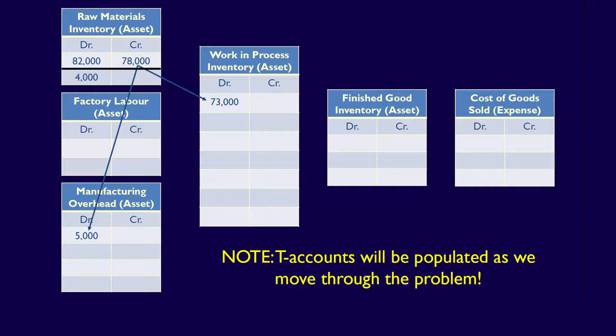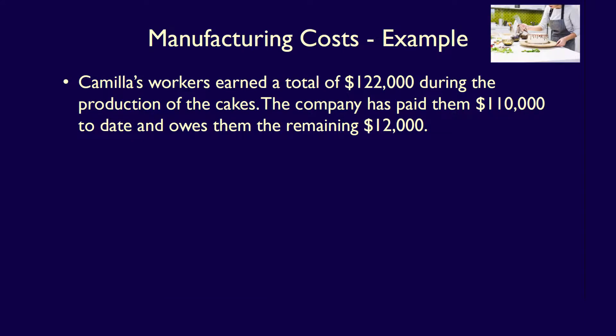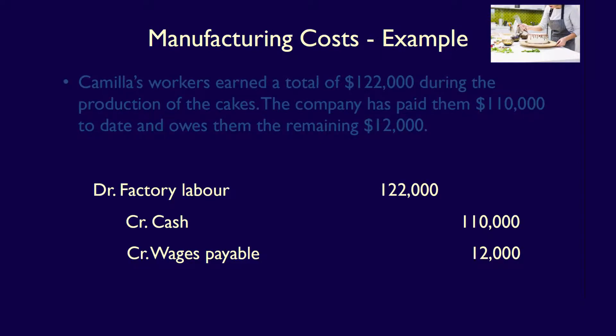That $4,000 is the raw material the company has left for future production. Camilla's workers have earned a total of $122,000. The company paid them $110,000 to date but owes the remaining $12,000, to be paid next month. We record this using a factory labor holding account: debit factory labor for $122,000, credit cash for $110,000, and credit wages payable for $12,000.